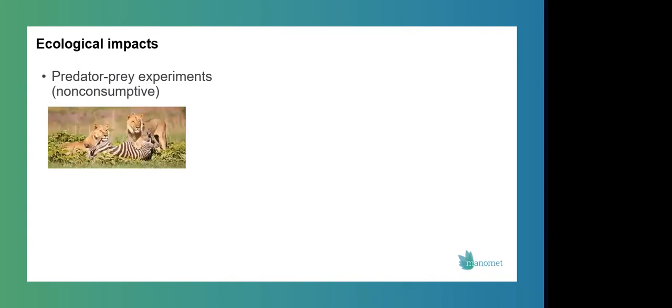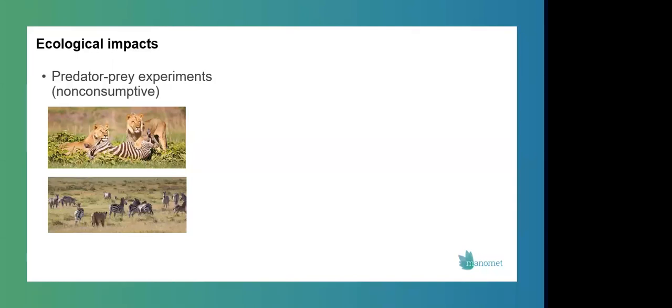Consumptive predation is exactly what it sounds like where a predator consumes a prey species. So the example here being a lion eating a zebra. But non-consumptive predation effects are indirect. So for instance, the mere presence of this lion can cause the entire herd of zebra to shift their movement behavior out of fear. So non-consumptive effects like this often have greater impacts on populations than the more simple removal of a single individual from consumptive predation.